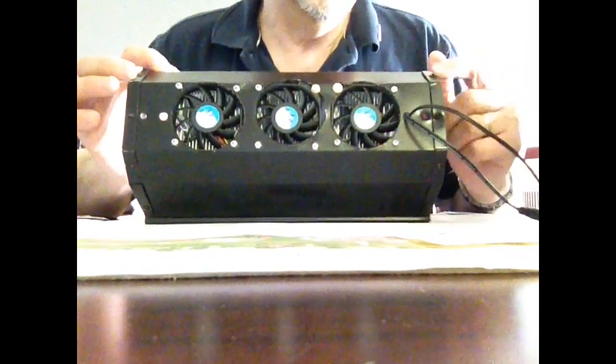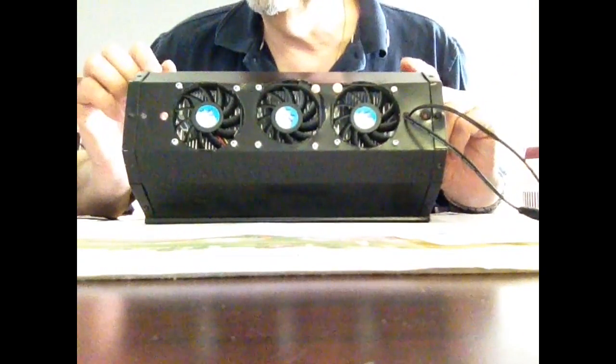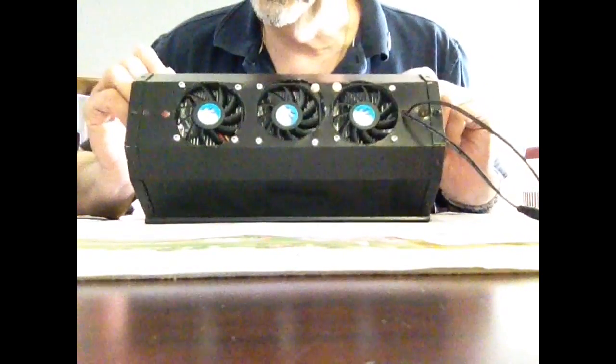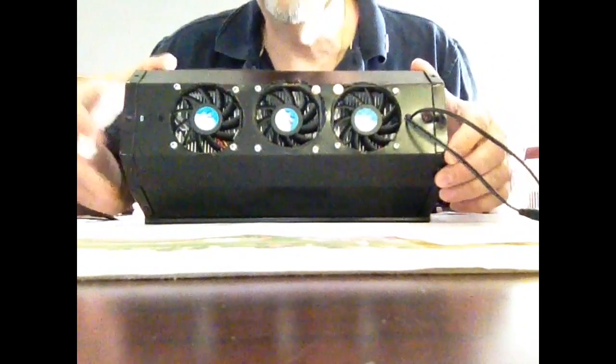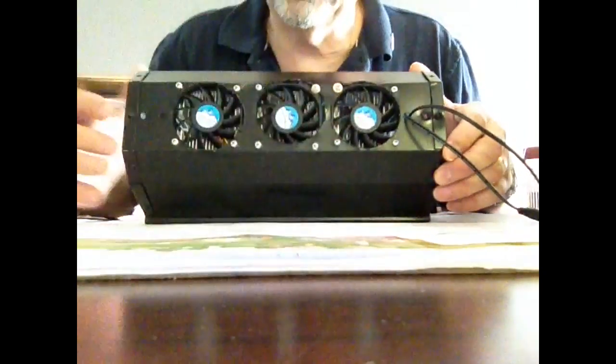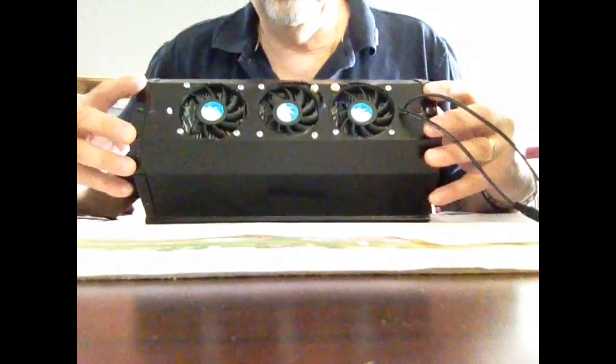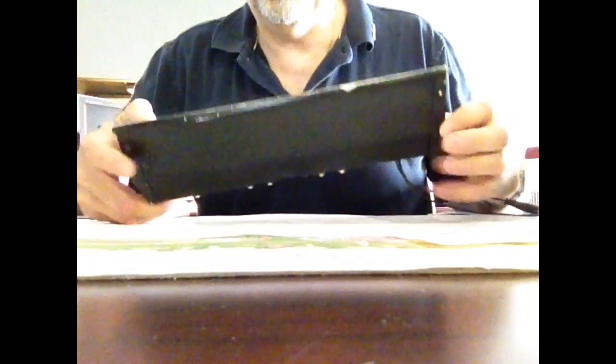I've started with a cheap basic aluminum metal halide fixture that I had laying around. I gutted the sockets out of it, drilled some holes across the top, and then mounted my heat sink and fans.